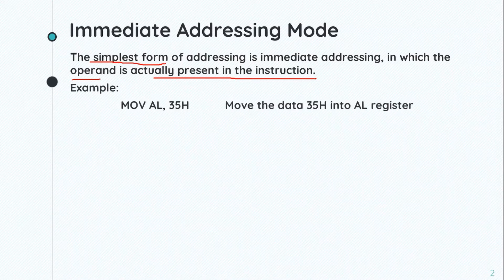For example, MOV AL, 35H. The H means 35 is a hexadecimal number. This type of addressing mode moves data into the AL register.